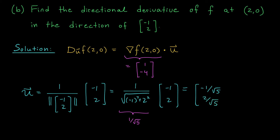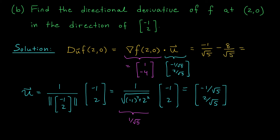Let's put it all together. The gradient is the vector (1, -4). The u vector is (-1/√5, 2/√5). The dot product is therefore 1 · (-1/√5) = -1/√5, and -4 · (2/√5) = -8/√5. We have a total of -9/√5.